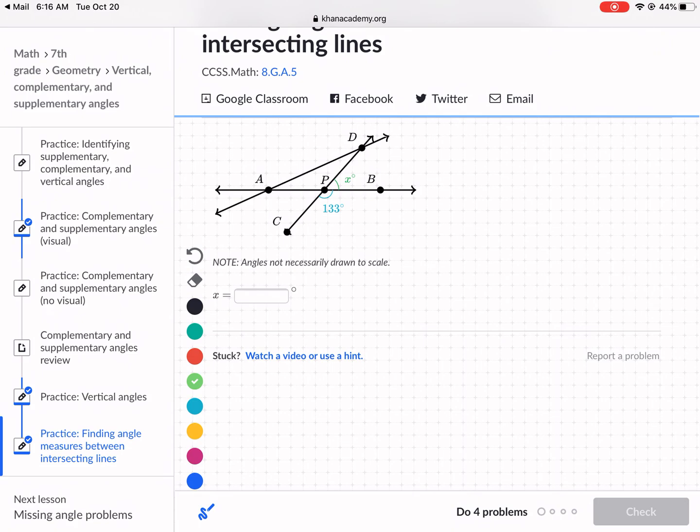And as you can tell that these two angles, the blue one 133 and the green one x, they together form this straight line that I drew in orange, which we could call cd if we wanted to. But what we see from these two, if they form a line that's called a linear pair, means they add up to 180 degrees or they are supplementary.